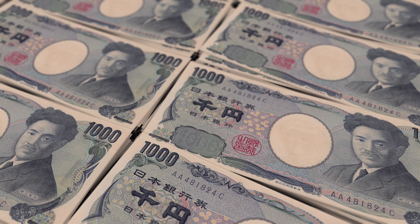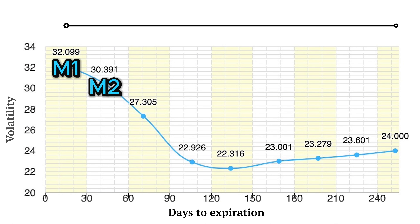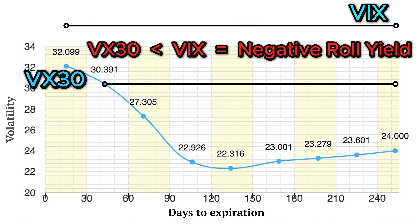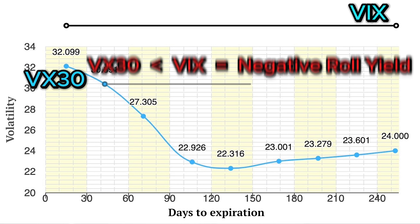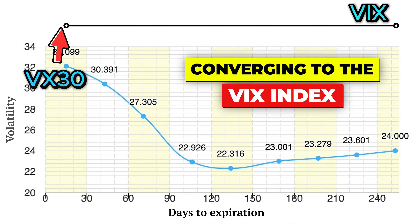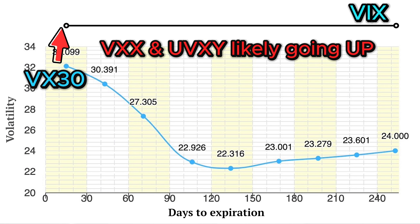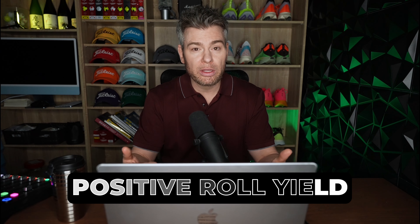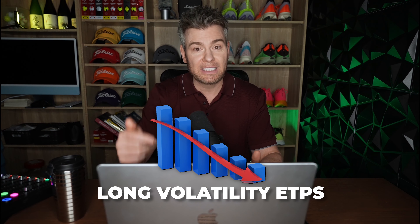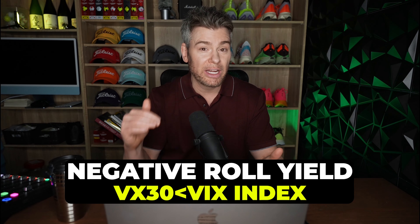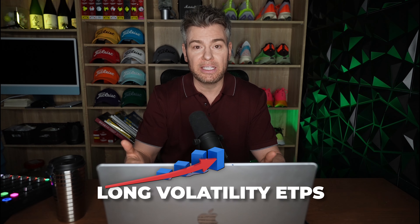Now let's look at a VIX futures term structure during a chaotic market where the S&P 500 is crashing. This one is from August 5th, 2024, during that big volatility spike from the Japan carry trade. On this day, the VIX index itself went as high as 65, which was way over where the VIX futures were trading. Essentially, VX30 was way below the VIX index — I call this negative roll yield. If this situation persists, as it does in a down market or extended recession, then there's a high probability VX30 will go up as it converges to the VIX index priced much higher than the futures. And if VX30 goes up, long volatility products like VXX and UVXY will go up as well. So positive roll yield is when VX30 trades above the VIX, causing long volatility ETPs to go down as they converge to spot VIX price. Negative roll yield is when VX30 trades below the VIX, causing those long volatility ETPs to go up.